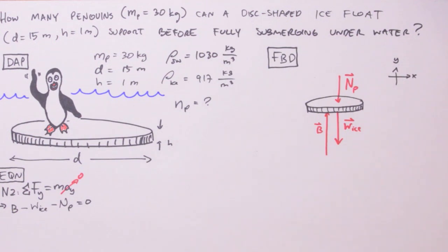Now our unknown, the number of penguins involved here, is buried in the term for the normal force due to those penguins. So what we're going to do is move the normal force to the other side of the equal sign.